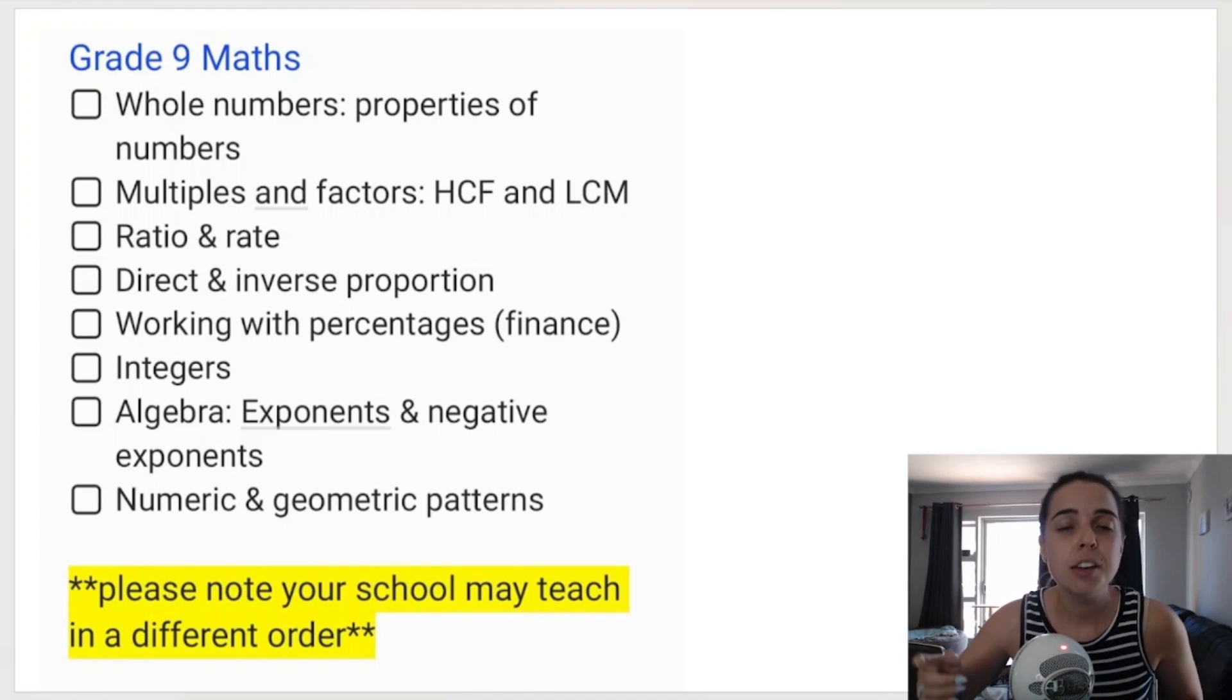Ratio and rate. There are a few things that are new here that you don't do in grade eight such as direct and inverse proportion. I do have a video on this on my channel if you want to go check it out. We also have more in-depth finance in grade nine. You might work with higher purchase which you may or may not do in grade eight. You work with compound interest and then the algebra, the exponents gets a little bit more complicated. You also work with negative exponents and then you've got numeric and geometric patterns.